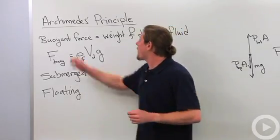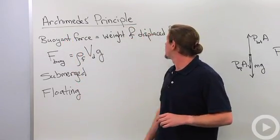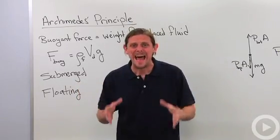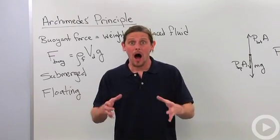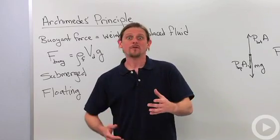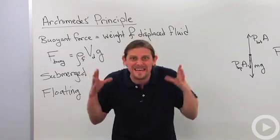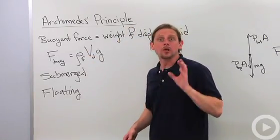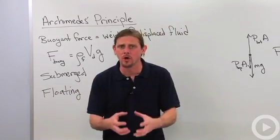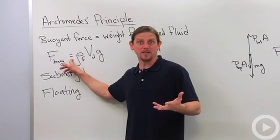What Archimedes said was that the buoyant force on something is equal to the weight of the displaced fluid. Now what does buoyant force mean? The buoyant force is the net force that is exerted on an object that's immersed in a fluid. We've got a force from the pressure on the bottom and a force from the pressure on the top — we add them together to get the net force, and that's the buoyant force. So the buoyant force equals the weight of the displaced fluid.